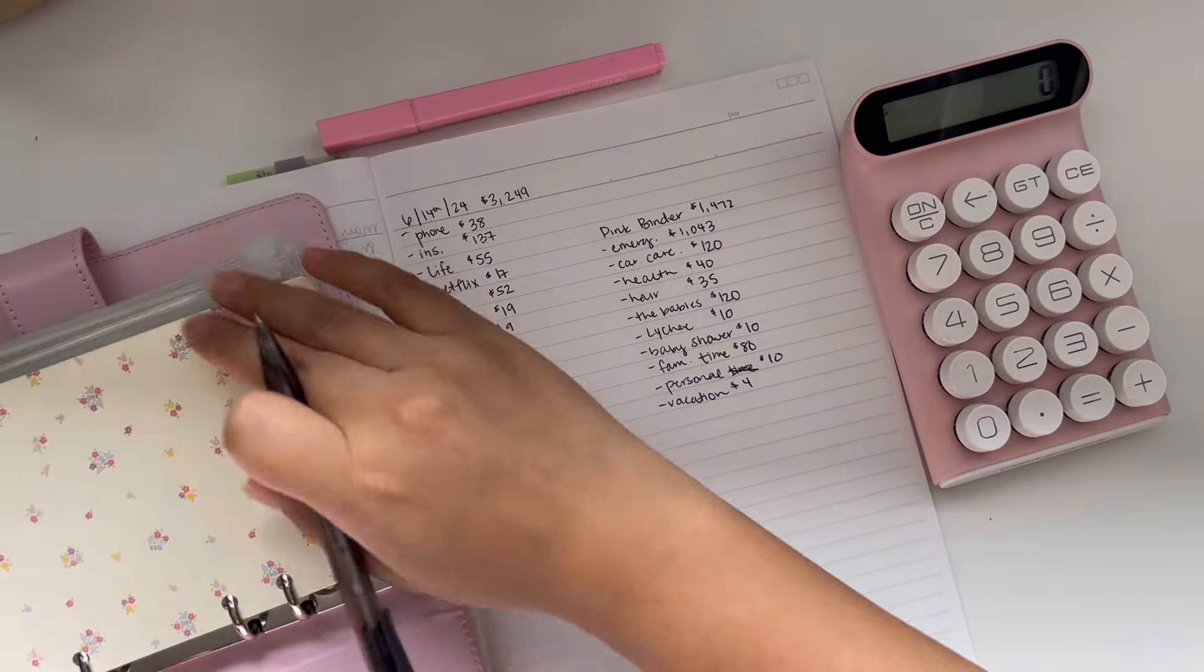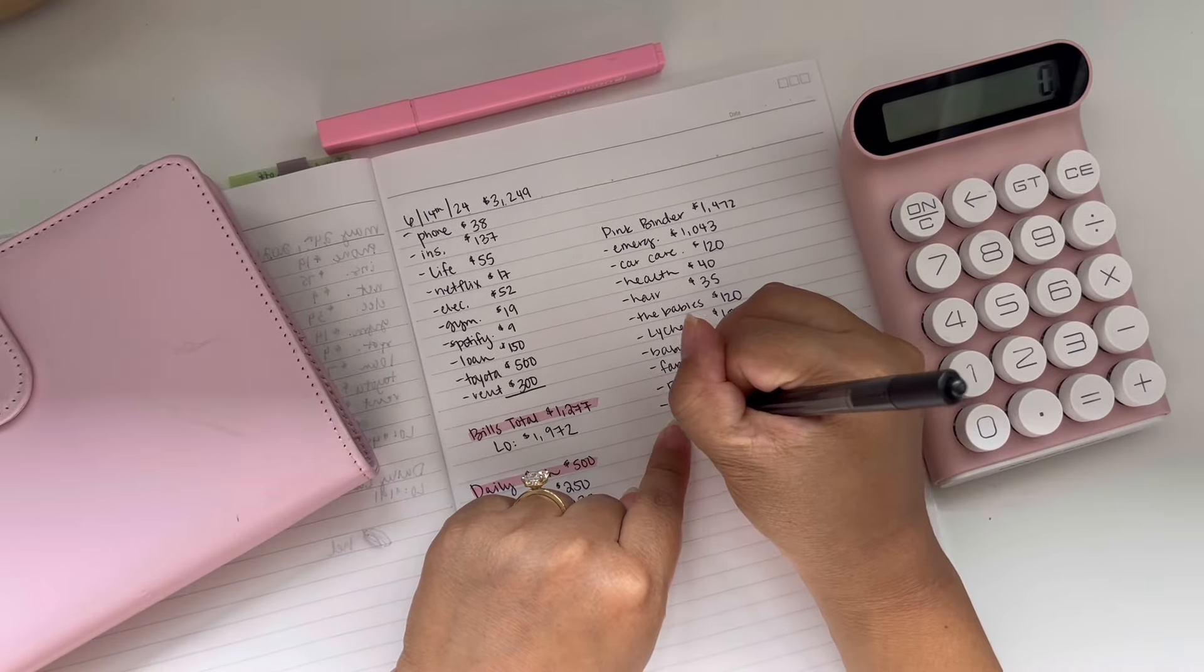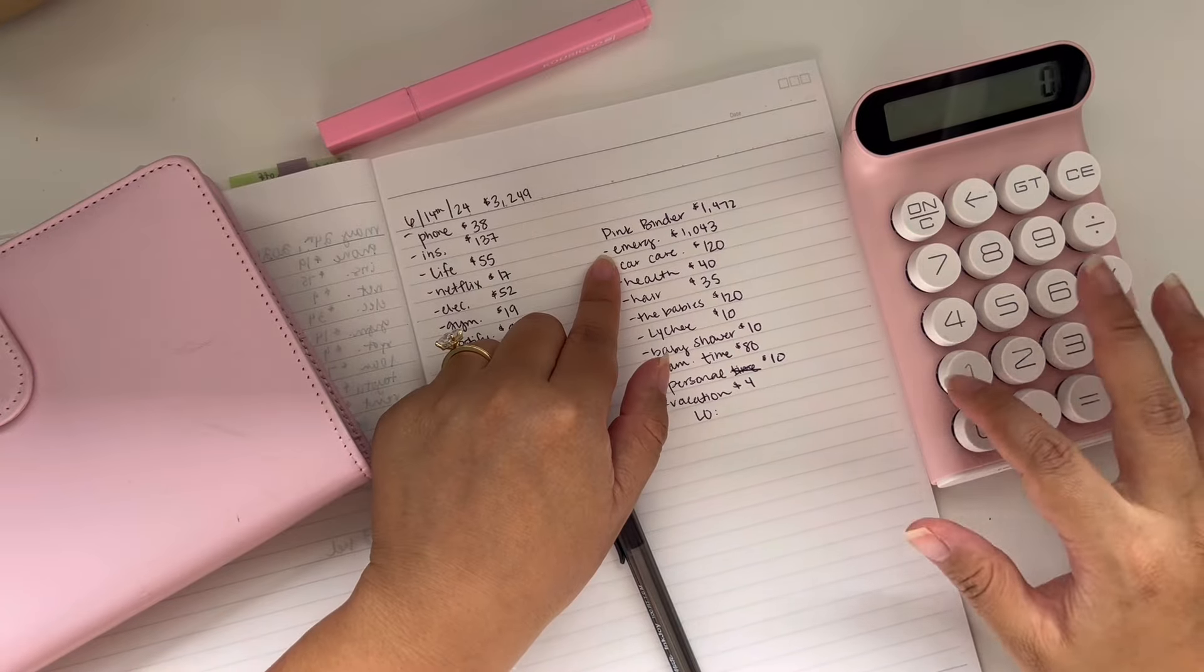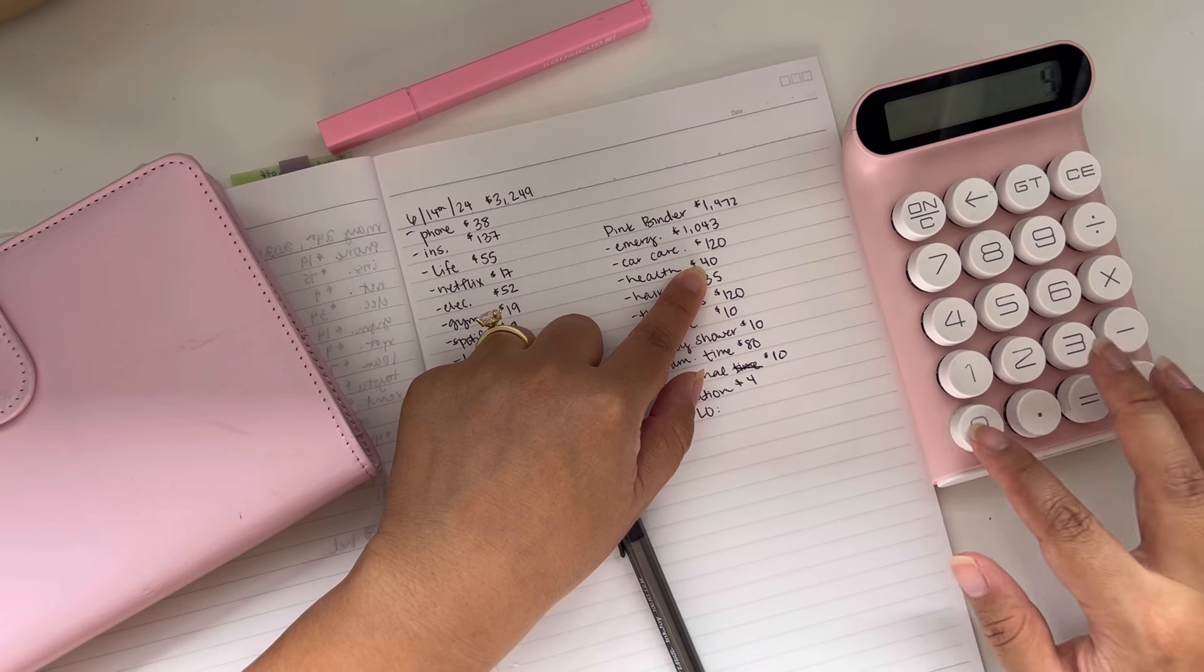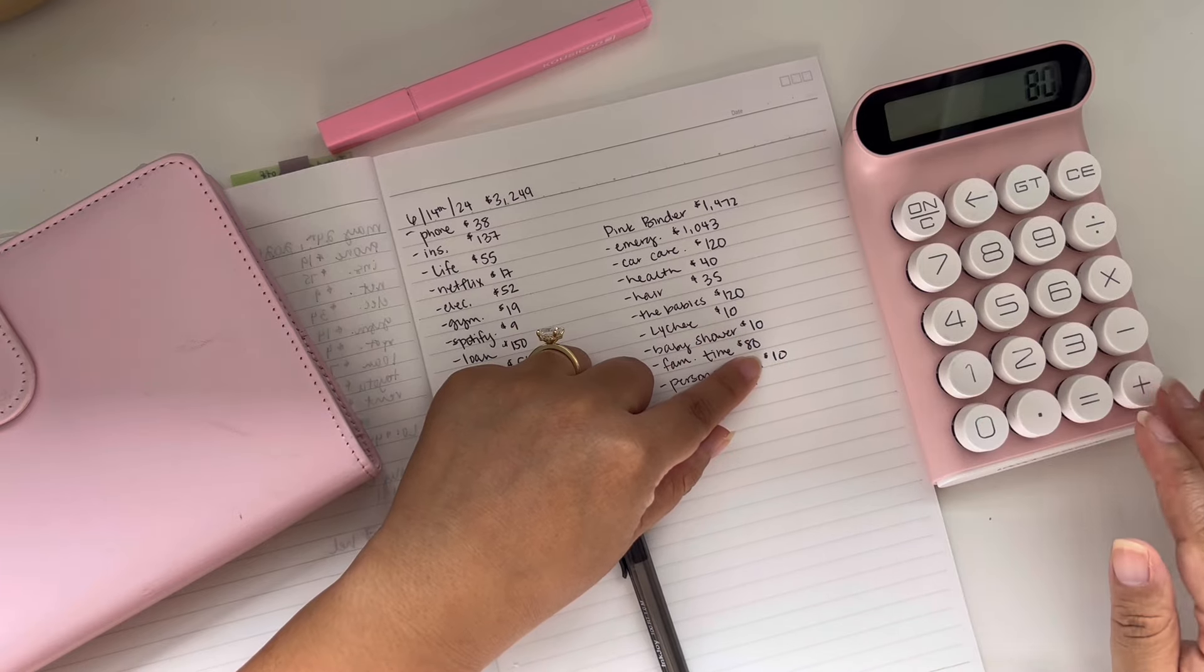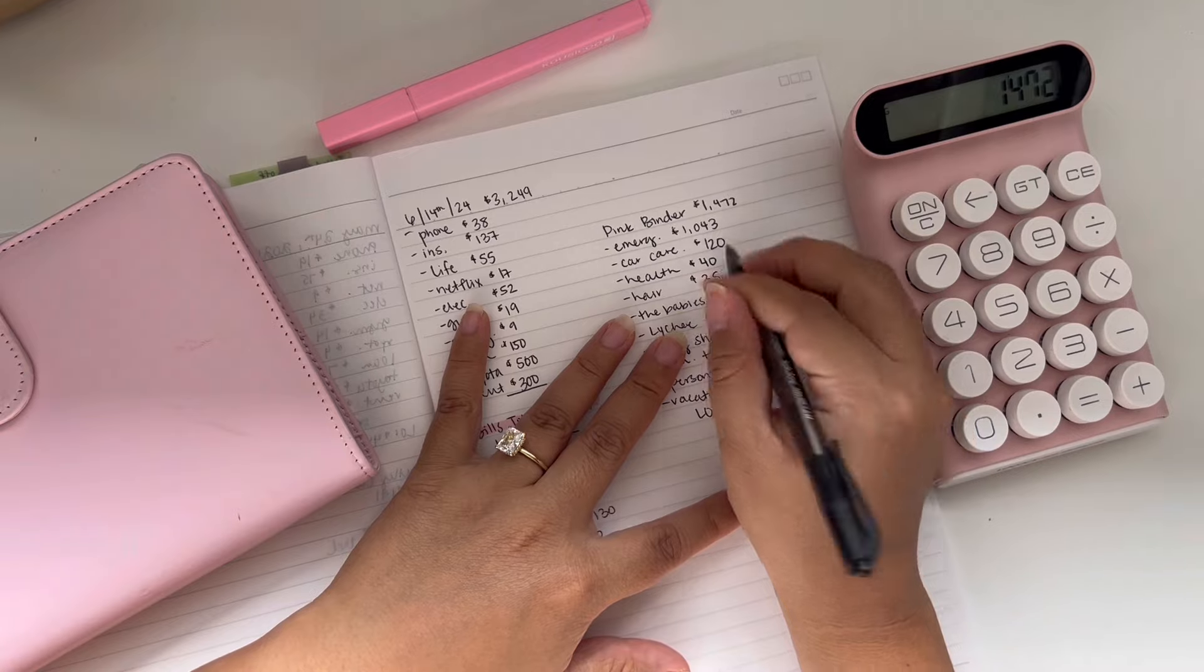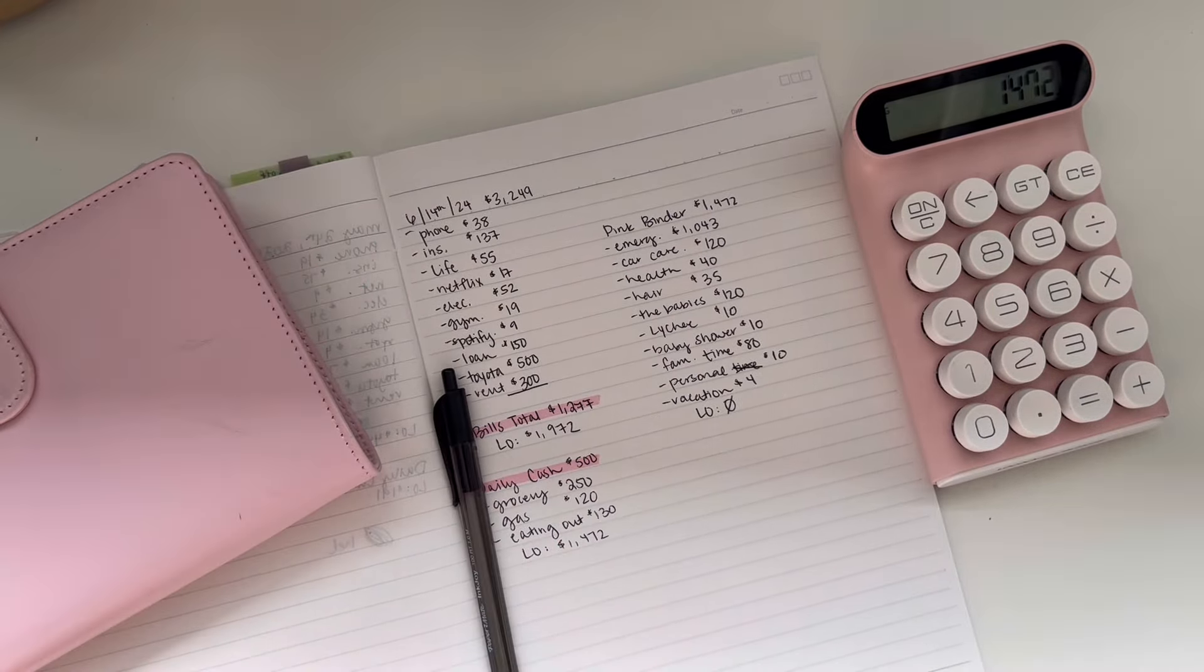Okay. So let's go ahead and add this up and we should have a leftover of zero. So $1043 plus $120 plus $40, $35, $120, $10, $10, $80, $10, $4. Oh, perfect. Okay. $1472. So that's a leftover of $0.